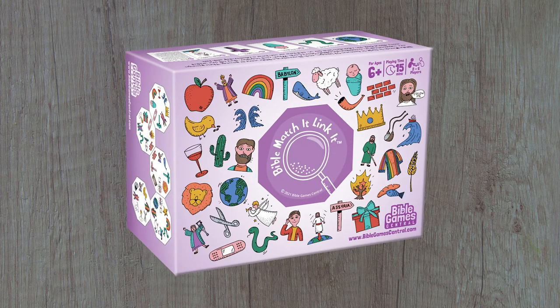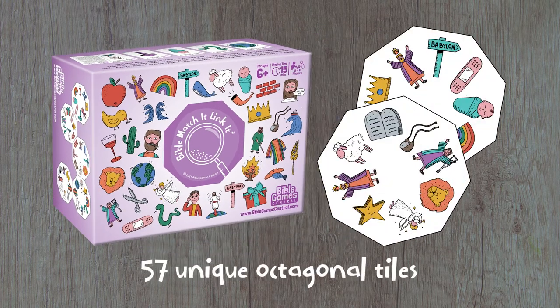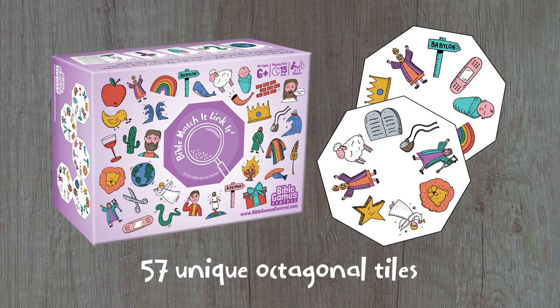Bible Match It Link It is a fast-paced game played with 57 unique tiles. Each tile has 8 images, one on each edge of the octagon.